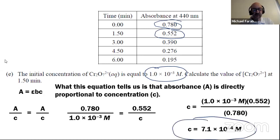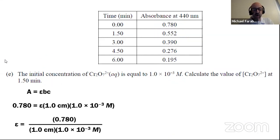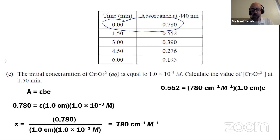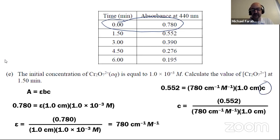What that equation tells us is that absorbance is directly proportional to concentration, so we can set up a proportion. We know the absorbance was 0.780 when the concentration of dichromate was 1×10⁻³ mol/L. Now we have a new absorbance value at 1.5 minutes, so we can plug in what we know and solve for the new concentration, which should be less than 1×10⁻³ because the absorbance has gone down. We get a concentration of 7.1×10⁻⁴. That's just a proportion. Alternatively, you could have solved for the molar absorptivity constant — it works out to be about 780 based on the information from time zero — and plugged that in to get the same answer.